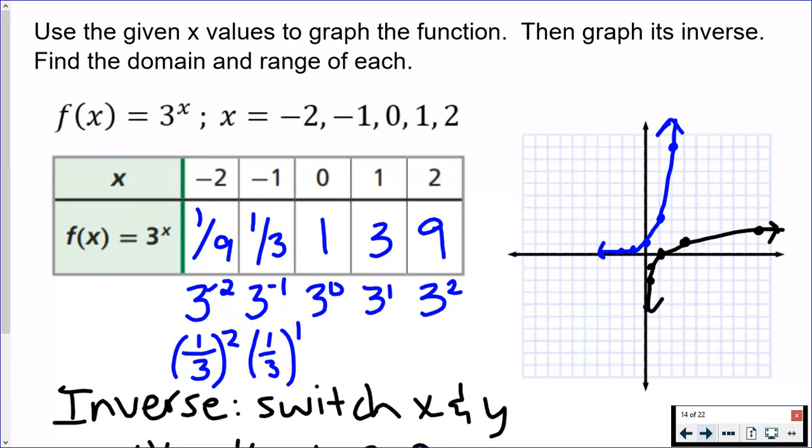Next thing we're going to talk about is the domain and range of each of these functions. So starting with f of x, which is the blue one, the original f of x equals 3 to the x. Domain is all of your x values. If you look at the graph, it's all x values from left to right.